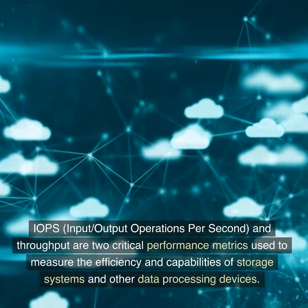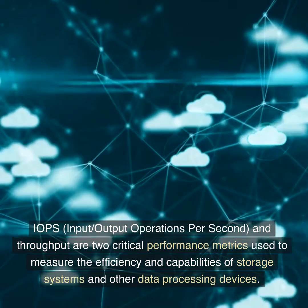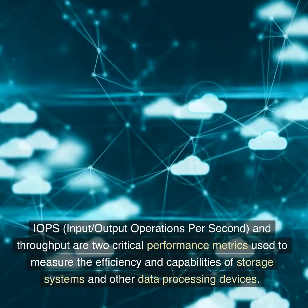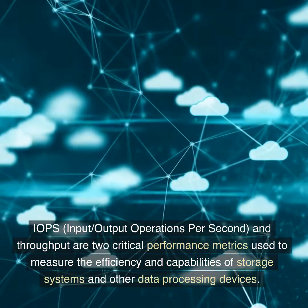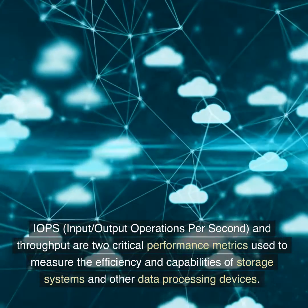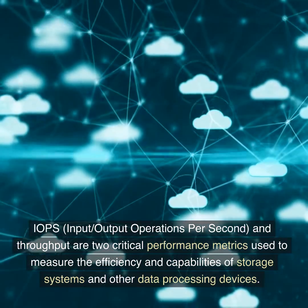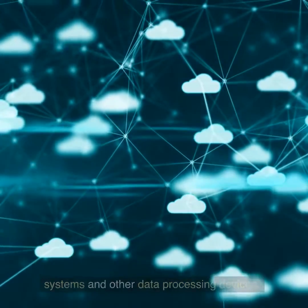IOPS, input-output operations per second, and throughput are two critical performance metrics used to measure the efficiency and capabilities of storage systems and other data processing devices.